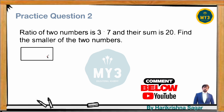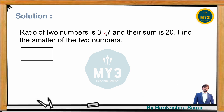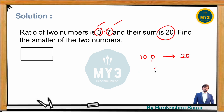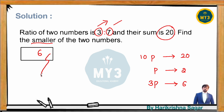Next question: the ratio between two numbers is 3:7 and their sum is 20. Find the smaller number. The ratio is 3:7, meaning three parts and seven parts. The sum of those two parts is 10 parts, and this 10 parts value is given as 20. If 10 parts is 20, then one part value is 2. They are asking for the smaller number — out of three parts and seven parts, three parts is the smaller number. If one part is 2, then three parts is 3 × 2 = 6. The smaller number is 6.